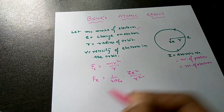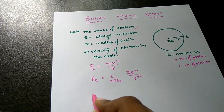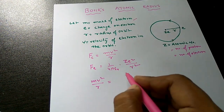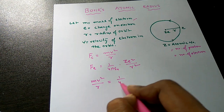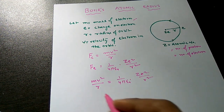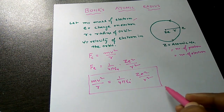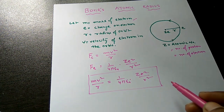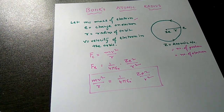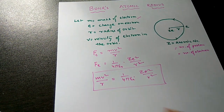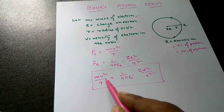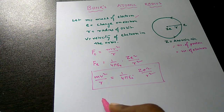Equating both forces, we get MV²/R = (1/4πε₀) × ZE²/R². This expression is very important and many numerical problems are based on it, so it must be remembered by students.